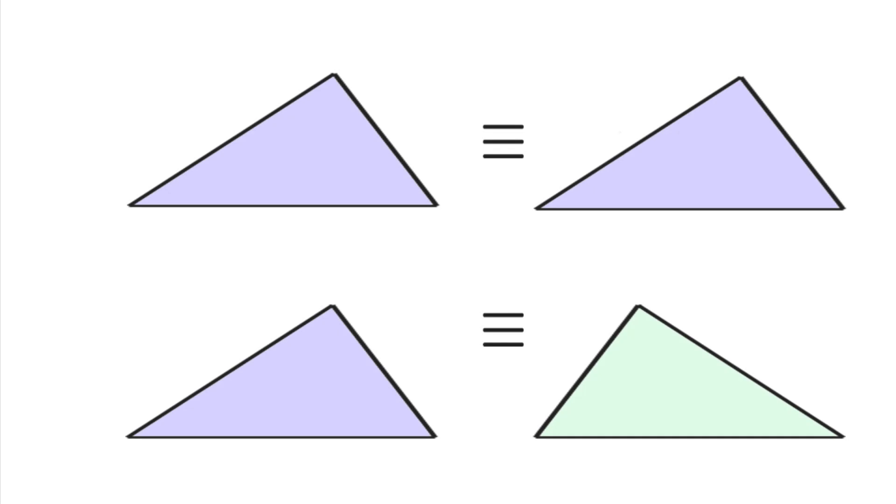Congruent triangles are not just exact copies of each other. As you can see from this diagram, the mirror image of a triangle is also congruent with the original. But generally, two triangles are said to be congruent if one of the following five conditions is met.